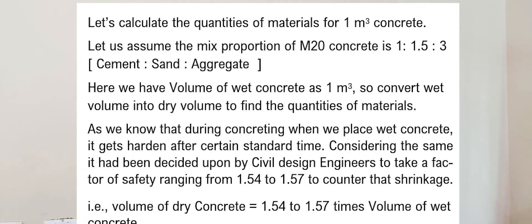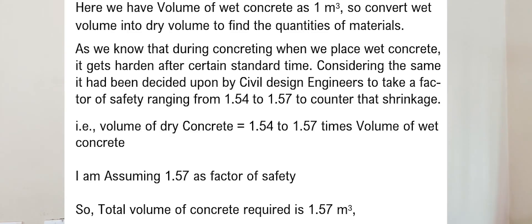We have a volume of wet concrete of 1 cubic meter, but we need to convert this wet volume into dry volume. We need a safety factor because after mixing water, there is a reduction in volume — studies show a reduction of 54% to 57%. Therefore, the volume of dry concrete equals 1.54 to 1.57 times the wet volume, so the total dry volume required is 1.57 cubic meters.